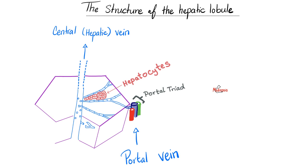Let's talk about the direction of flow. The branch of the hepatic artery takes blood from the common hepatic artery and goes upward to supply the hepatocytes. The branch of the portal vein moves in the same direction — upward. But bile moves downward — it takes bile from the hepatocyte and delivers it to the duodenum. If there is an excessive amount, it takes bile from the hepatocyte and stores it in the gallbladder.